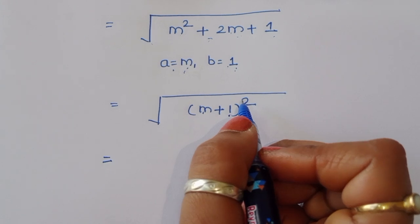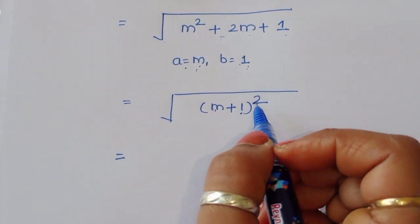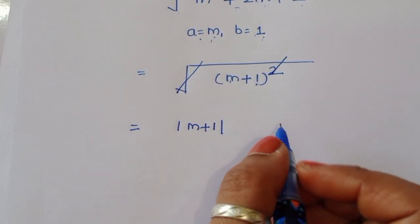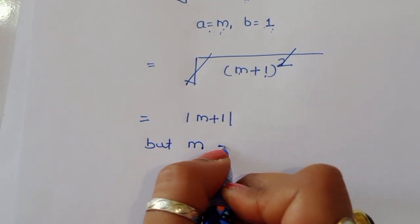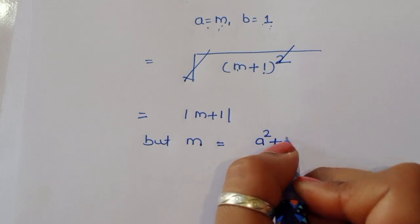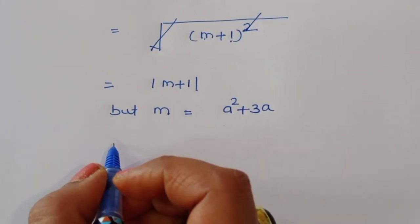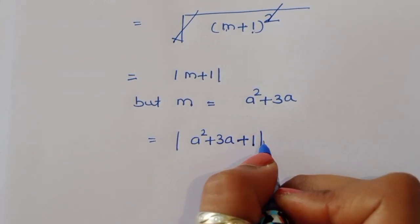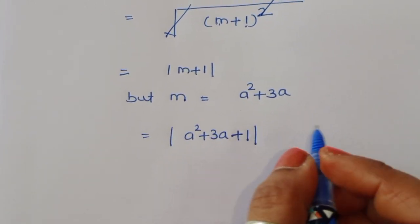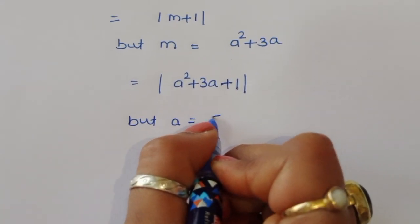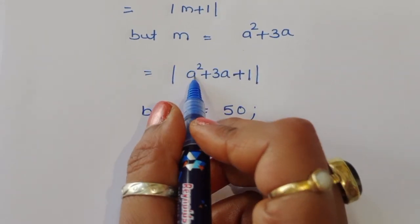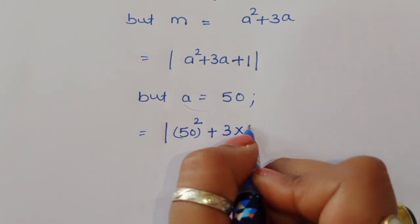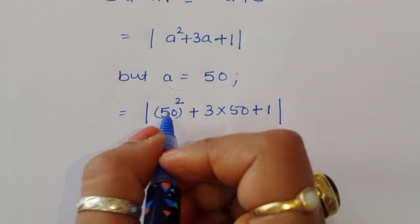The square and square root cancel, giving mod of (m plus 1). Since m equals a squared plus 3a, we get m plus 1 equals a squared plus 3a plus 1. Substituting a equal to 50: 50 squared plus 3 times 50 plus 1 equals 2500 plus 150 plus 1.